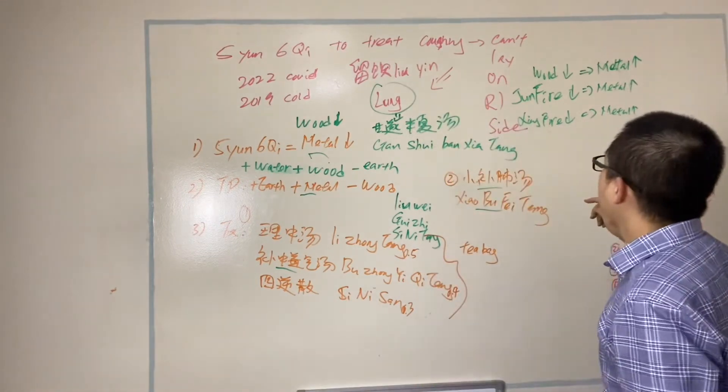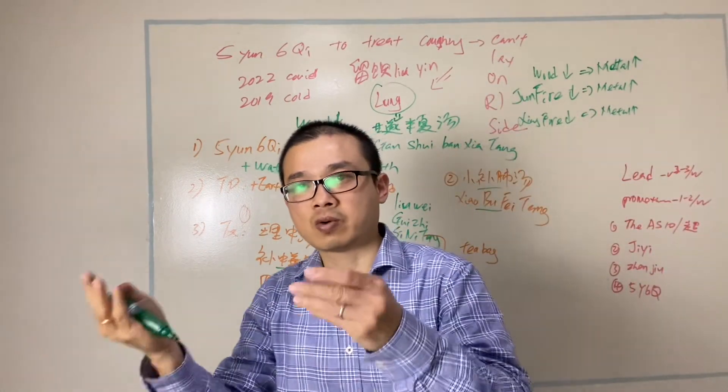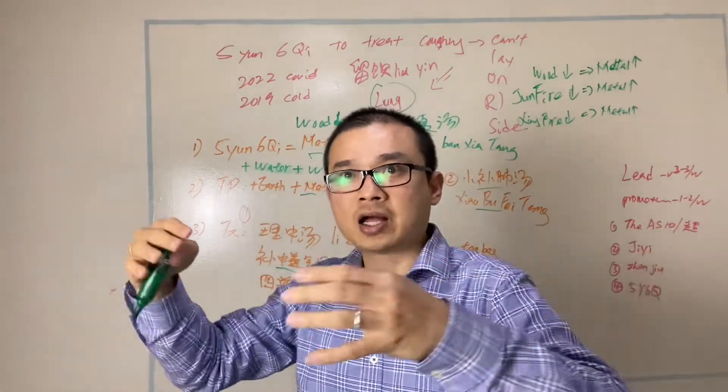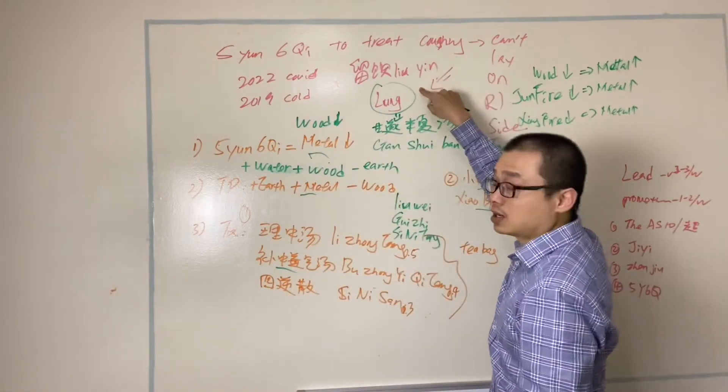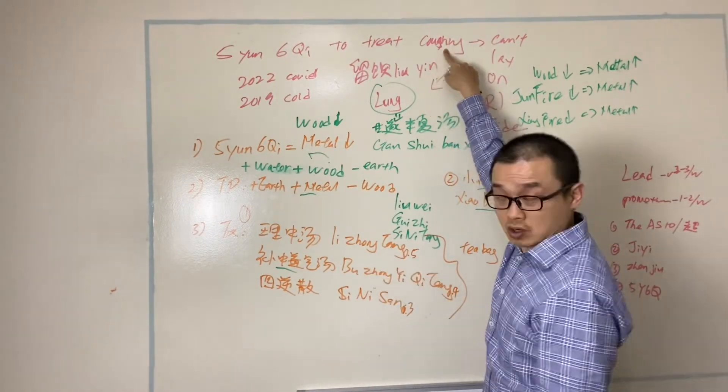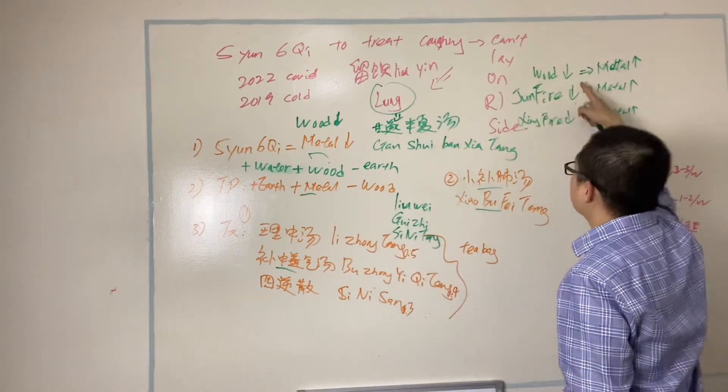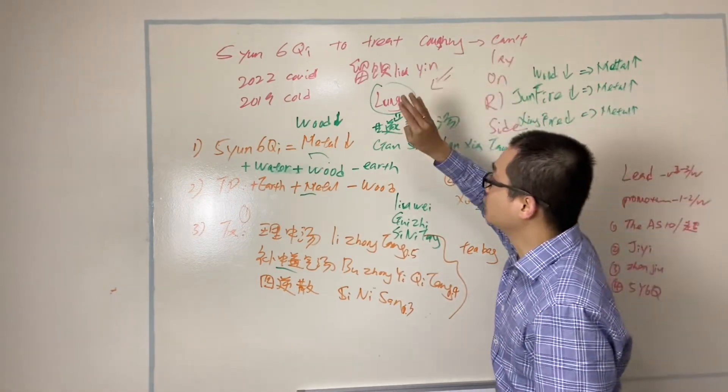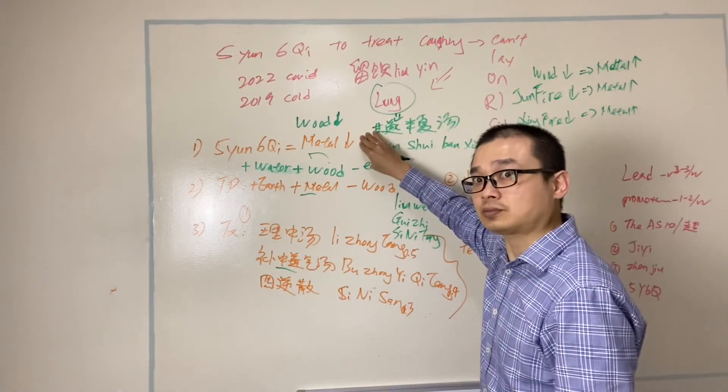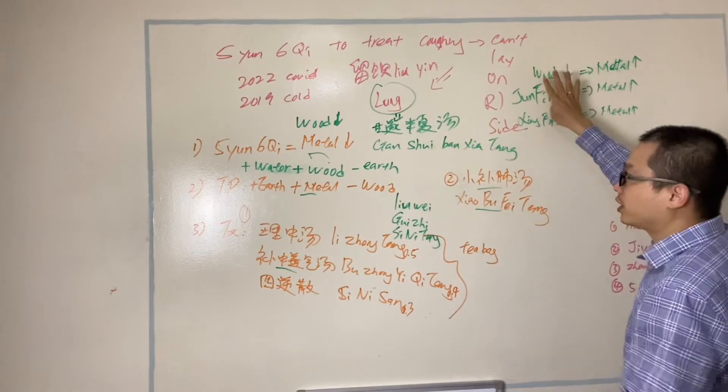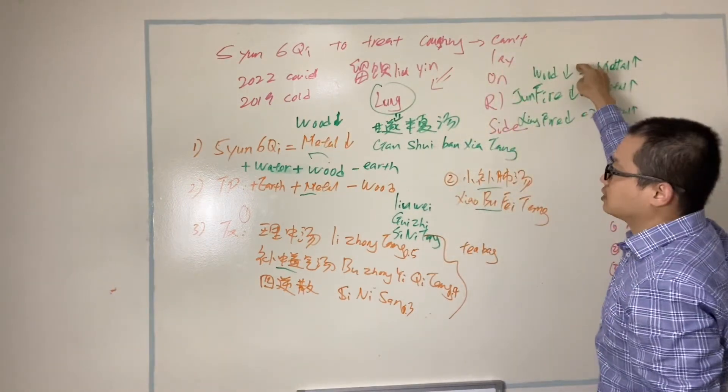And Huang Di Nei Jing said, well, we know when lung out of balance it causes coughing. But Huang Di Nei Jing also said the other organs out of balance can cause lung out of balance to cause coughing, to cause the symptoms. So where are the other organs? Those are the other organs out of balance. So I'm quite lucky in this case because the diagnosis is actually on the lung. As the lung itself out of balance, we treat lung, we treat metal.